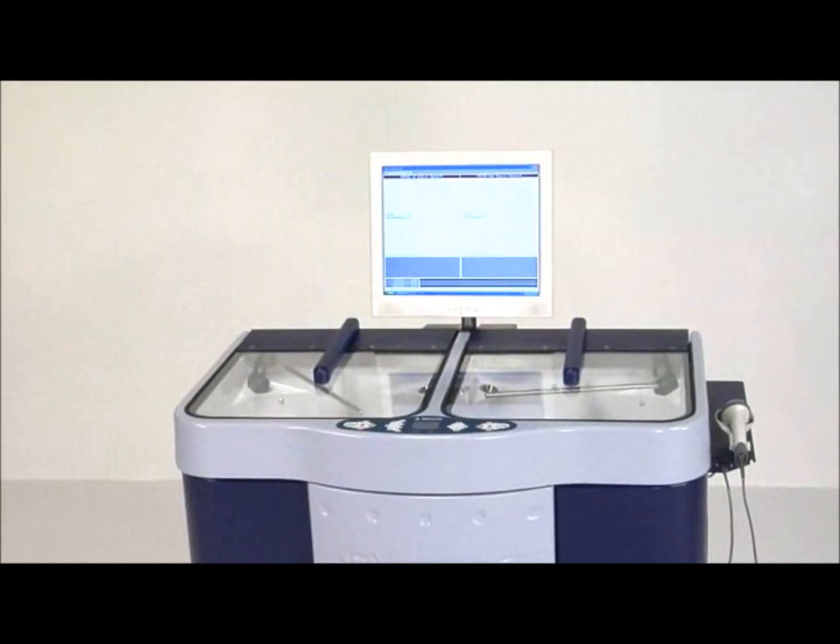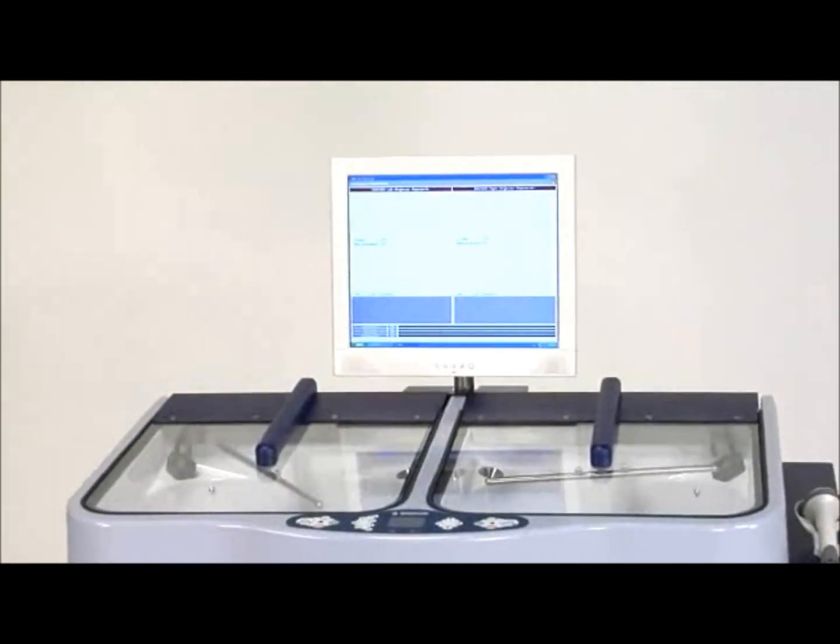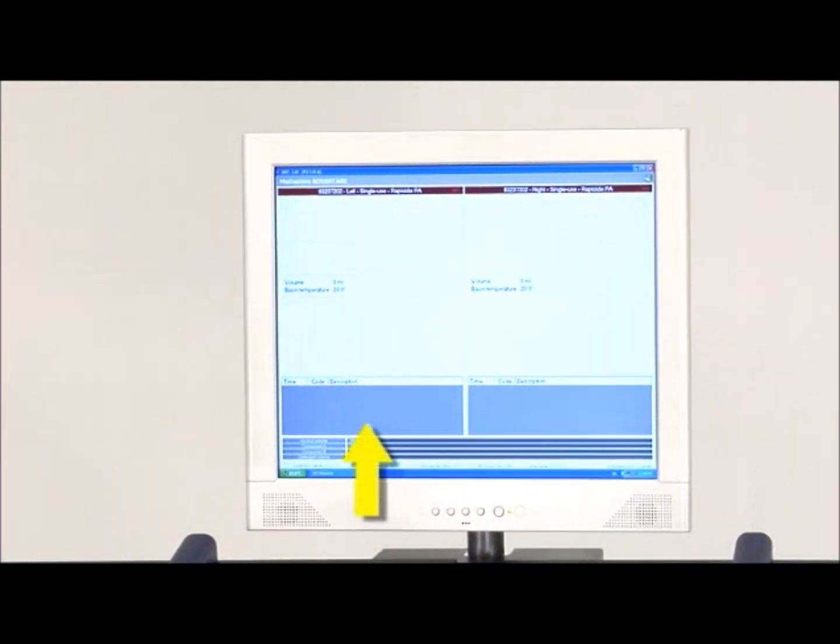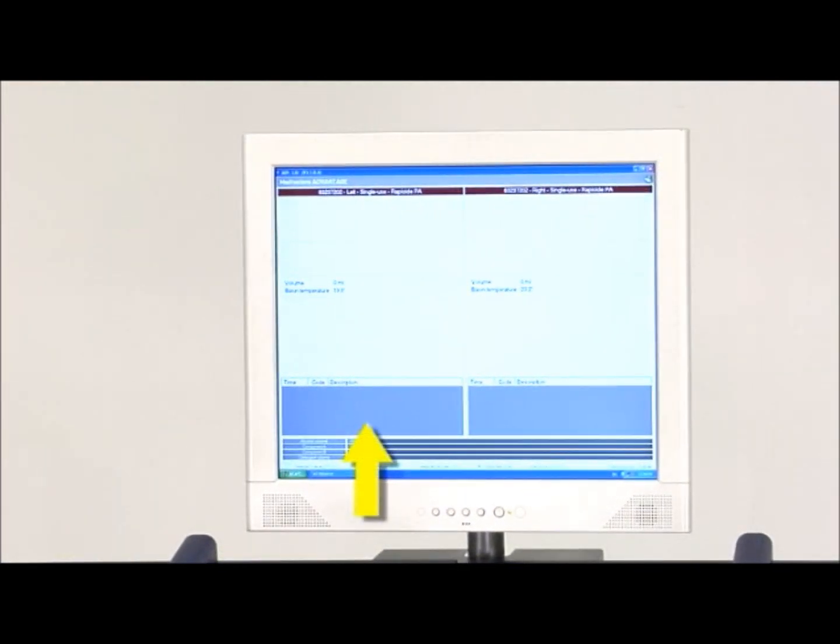The monitor displays in a split-screen format for easy viewing of each basin's cycle information. For example, the left side of the screen displays the cycle information being performed in the left basin.